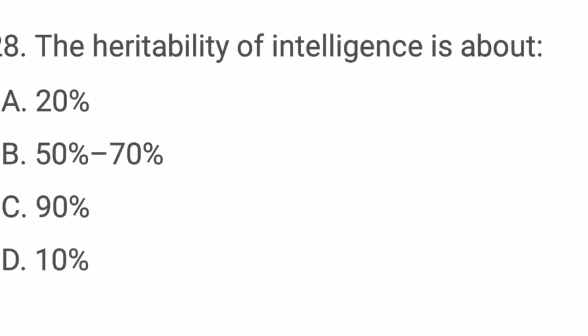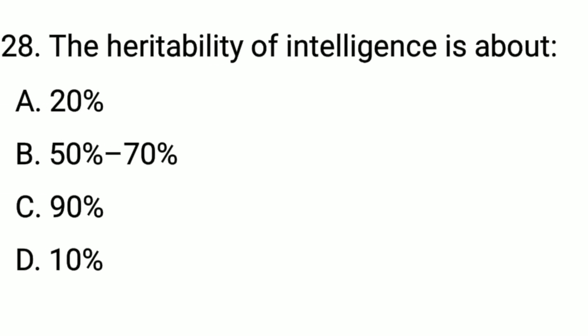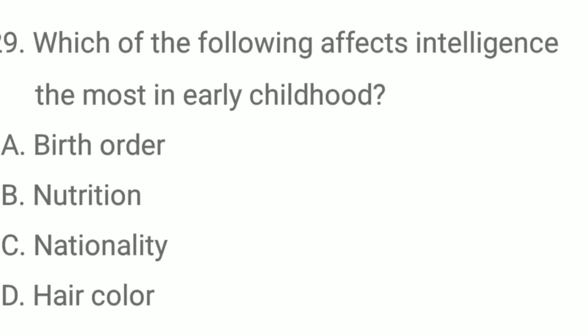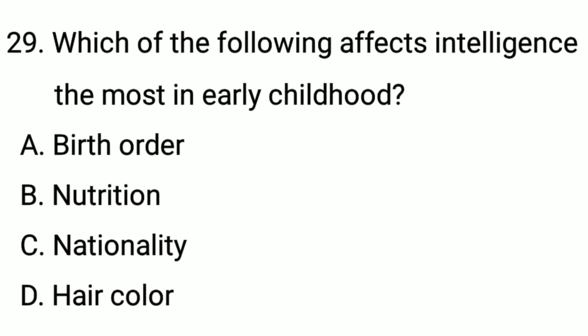Q28. The heritability of intelligence is about... The correct option is option B: 50% to 70%. Q29. Which of the following affects intelligence most in early childhood? The correct option is option B: nutrition.